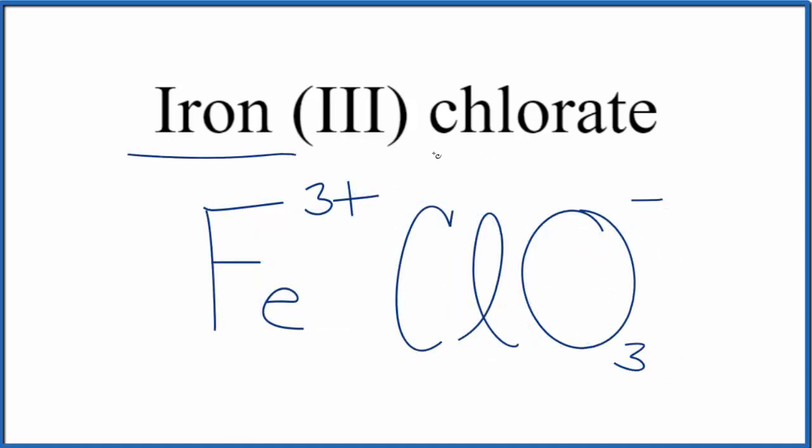Since iron, that's a metal, and the chlorate, this is a polyatomic ion, this is made up of a group of non-metals. This is going to be an ionic compound.